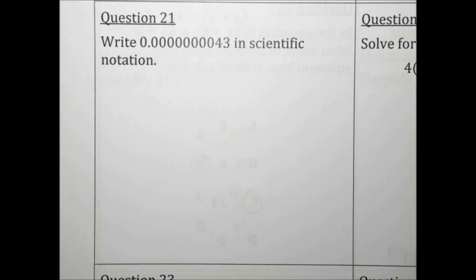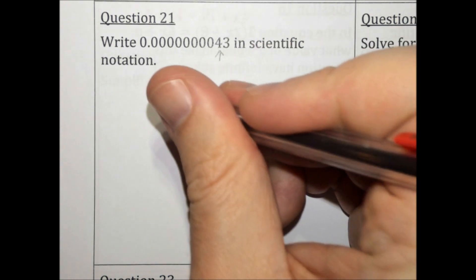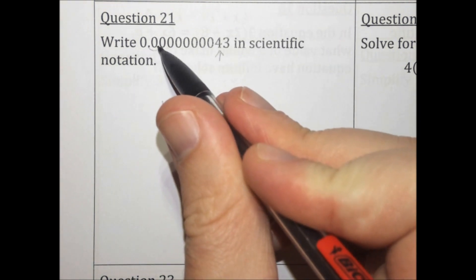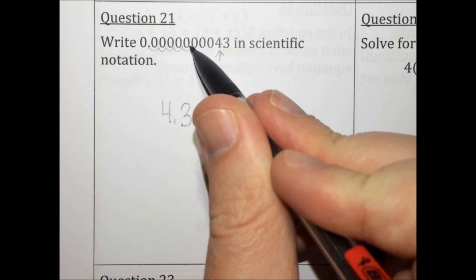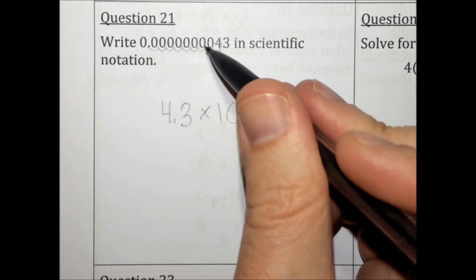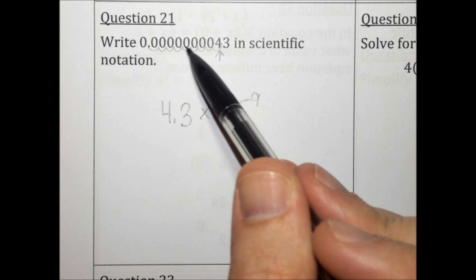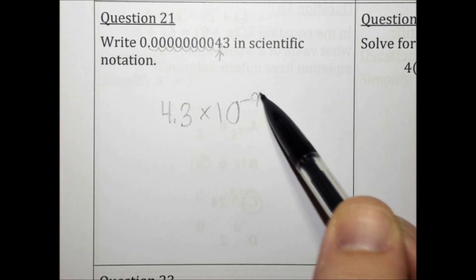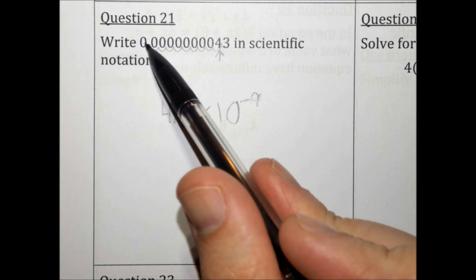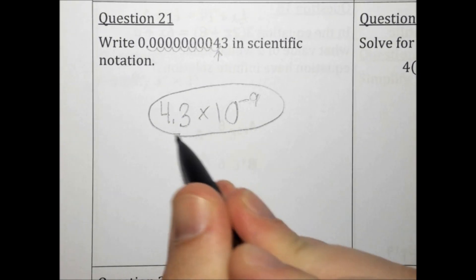Write this number in scientific notation. The decimal needs to go here in order to make a number between 1 and 10, so it will be 4.3. Now we just need to count how many times the decimal moved: 1, 2, 3, 4, 5, 6, 7, 8, 9 — it moved 9 times. And it needs to be a negative 9, because as you make the number bigger, the exponent needs to get smaller. A negative exponent makes a really small number, and this original number is really, really small.